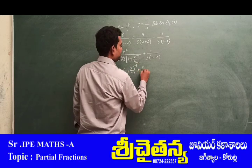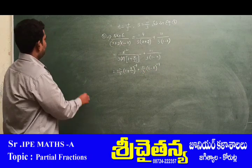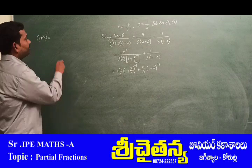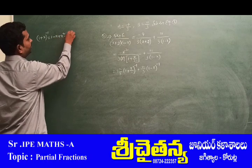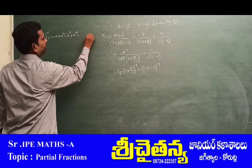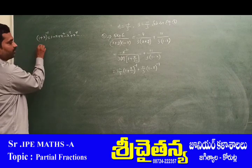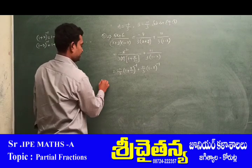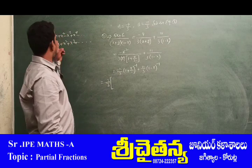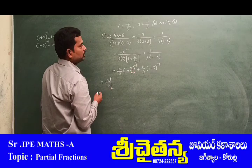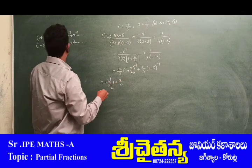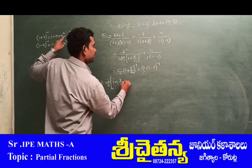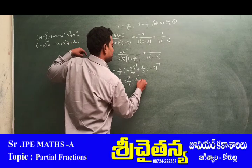Now applying the power series formulas: (1 + x/2)^(-1) = 1 - x/2 + x²/4 - x³/8 + and so on. And (1-x)^(-1) = 1 + x + x² + x³ + and so on. So we have: (-2/3)(1 - x/2 + x²/4 - x³/8 + ...) + (11/3)(1 + x + x² + x³ + ...).